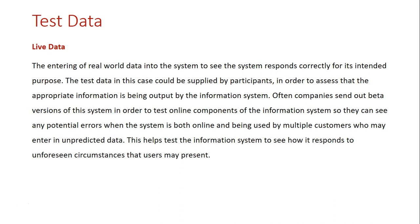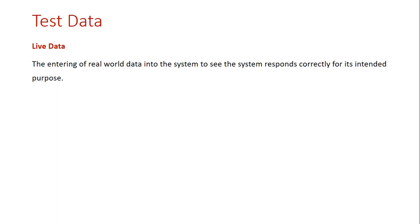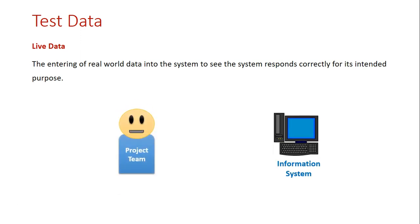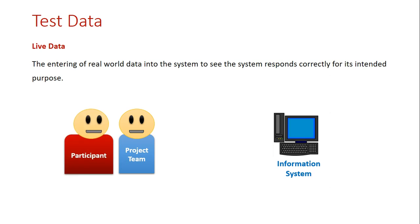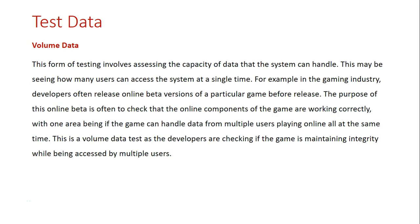With live data, we're giving the system real data. If it is being sent out in a beta version to online users, it can also generate real errors from users entering in errors, and we see how the system responds. In a live data scenario, the project team aids with entering data but the participant is also involved, supplying live data to the system. Together they enter data and document how the system responds to the live data.